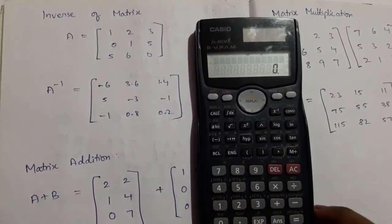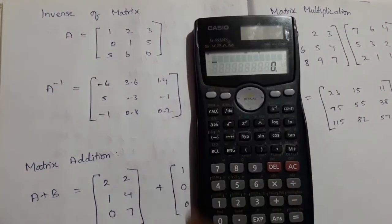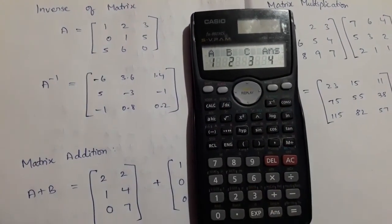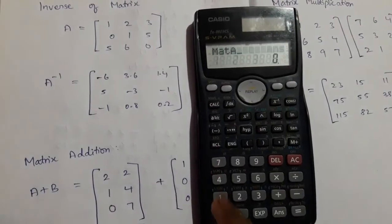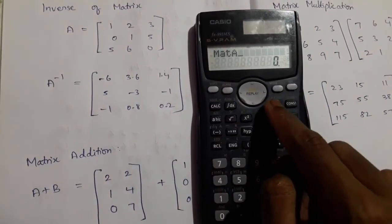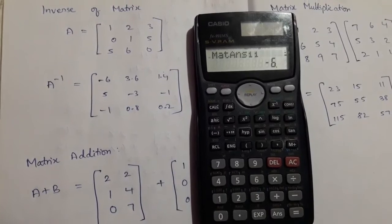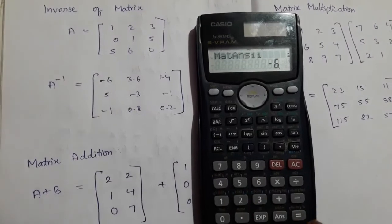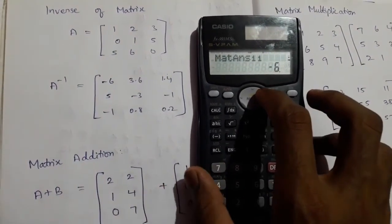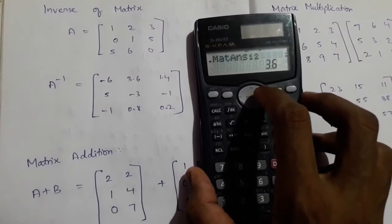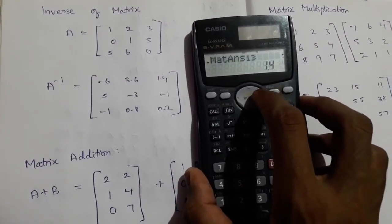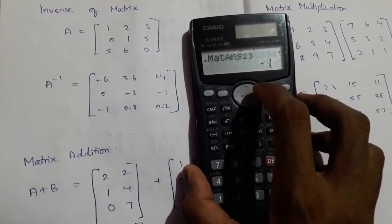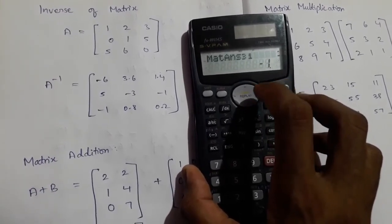Then press the On button, press Shift, press 4, then go to matrix and press 3. Select matrix A, press 1, press the X-inverse button, then press equals. We can get the inverse of the matrix — the results are: 3.6, 1.4, 5, minus 3, minus 1, minus 1, 0.8, and 0.2.